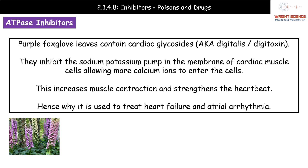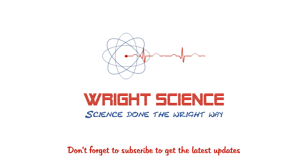In terms of how we can use this potentially damaging chemical in a medicinal way: if someone has heart failure and atrial arrhythmia, we can actually prescribe them digitalis, and it can help to strengthen their heartbeat. We can hopefully help people with heart conditions improve their quality of life through improving their heartbeat — all from something we can get from a little common garden plant. Don't forget to subscribe to the channel and head over to the A-Level Biology website, where you can find a range of other resources to help you in your study of A-Level Biology.